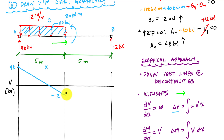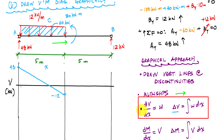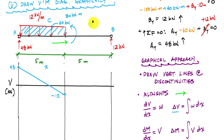The concentrated moment does nothing to my shear diagram — it has no impact. The distributed load between the middle and point B is zero, and an antiderivative of zero is a constant, so my shear diagram here is constant. I draw a straight line all the way across, and my shear diagram ends at negative 12 kilonewtons. Now I'm ready to draw my moment diagram.